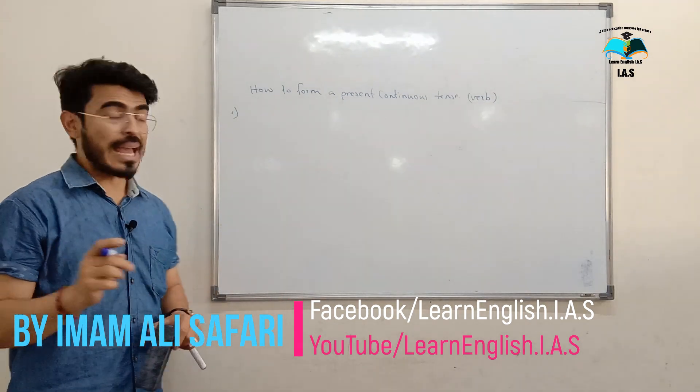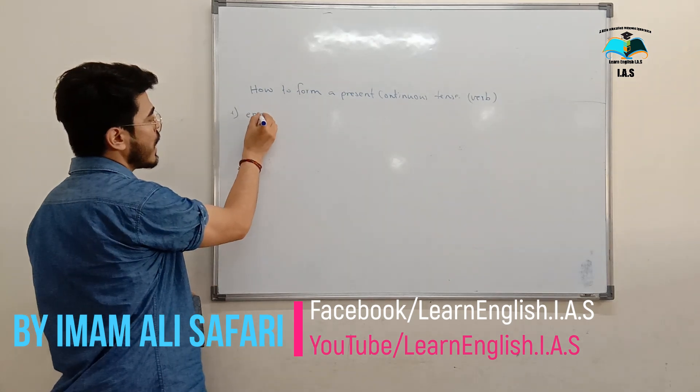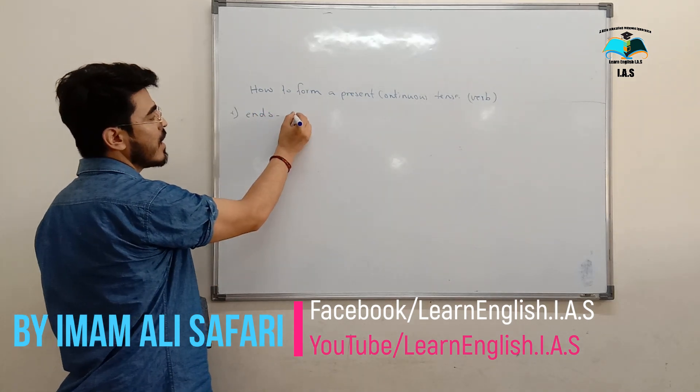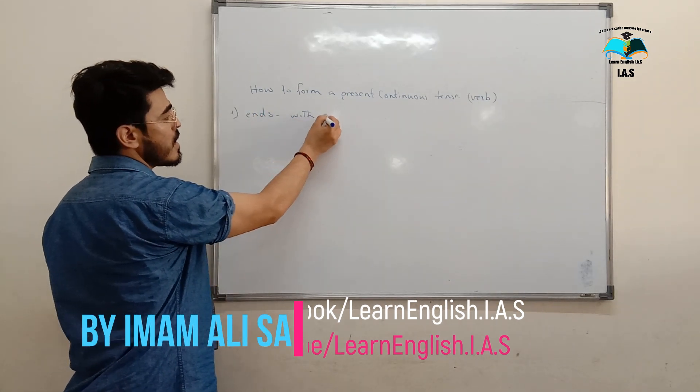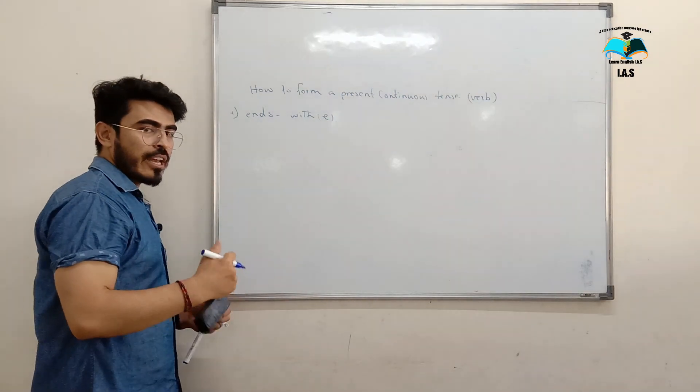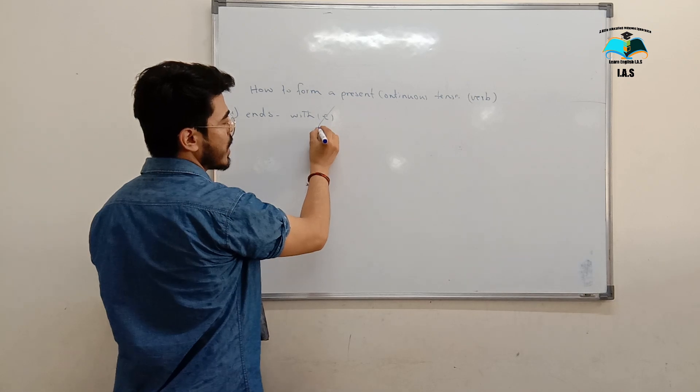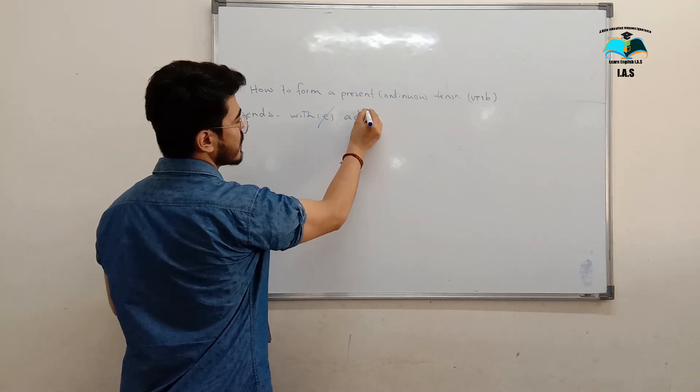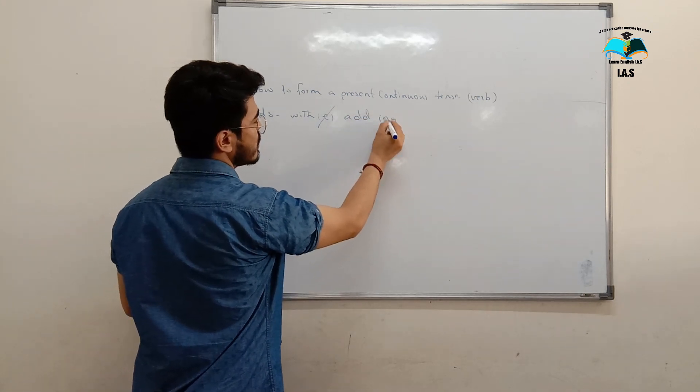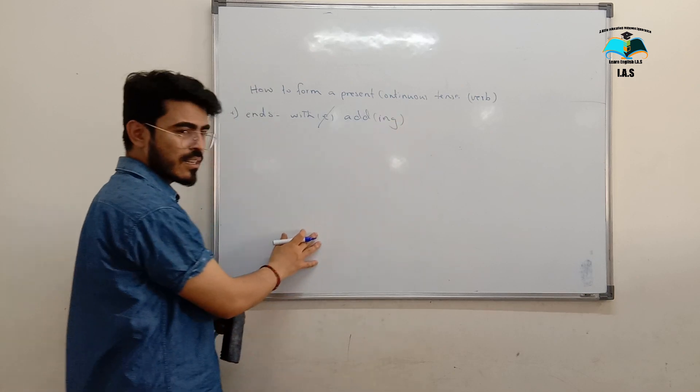If a verb ends with E, in order to put ING, I am omitting this one and then I have to add ING. Understand? The first rule.